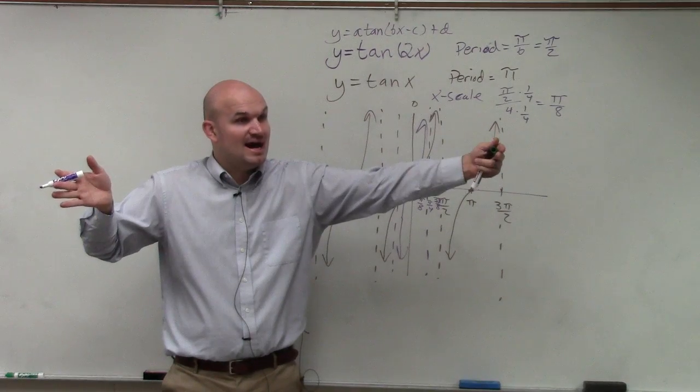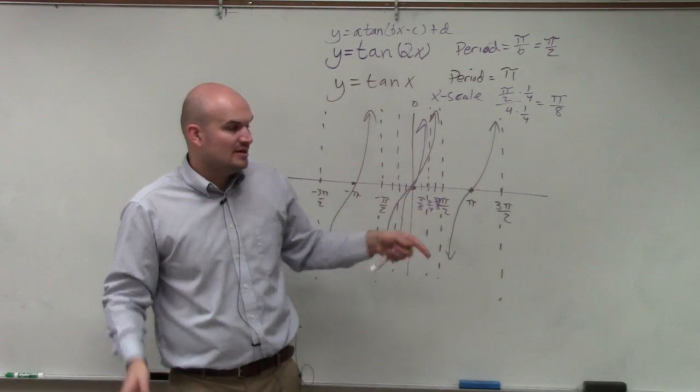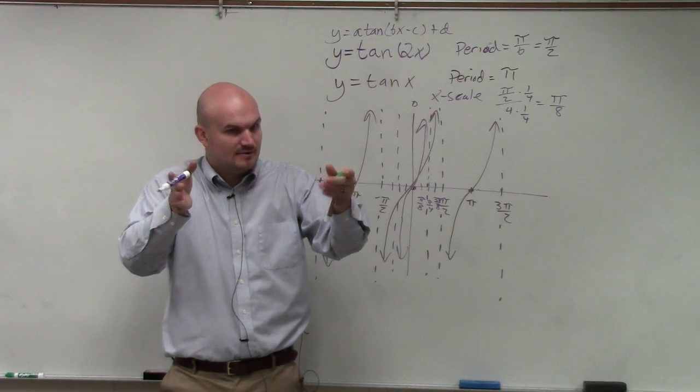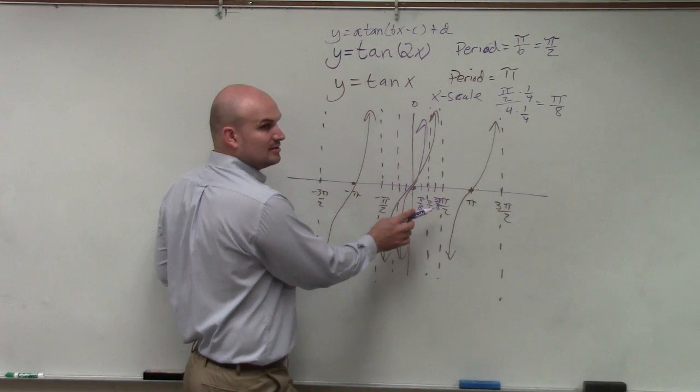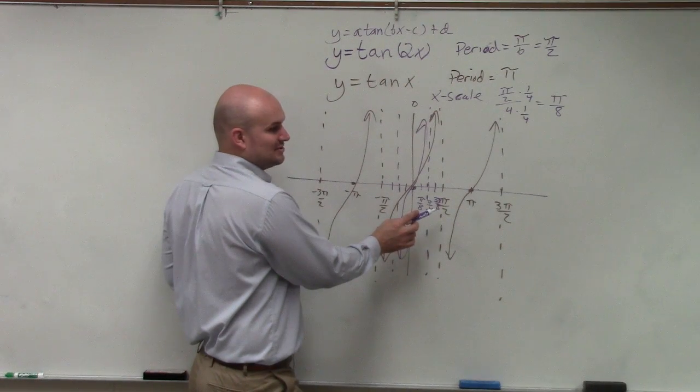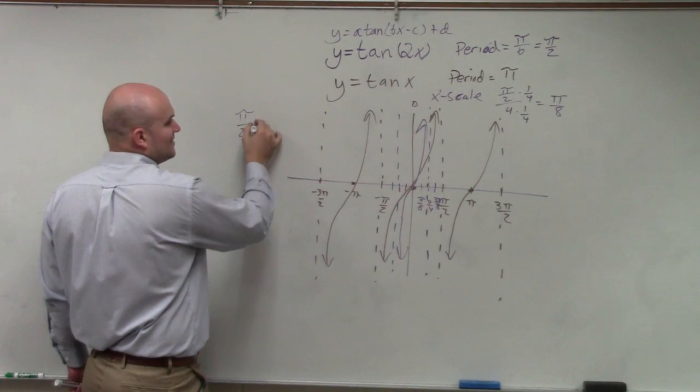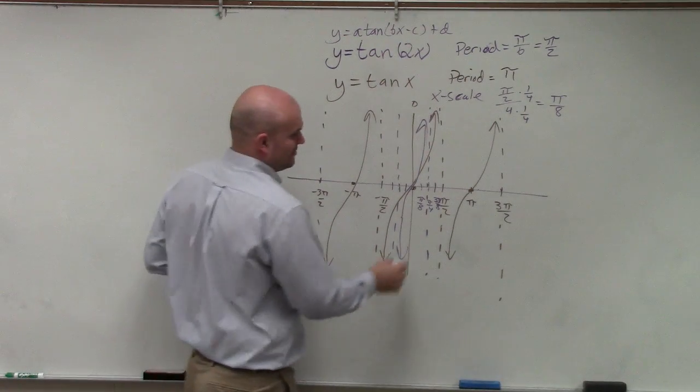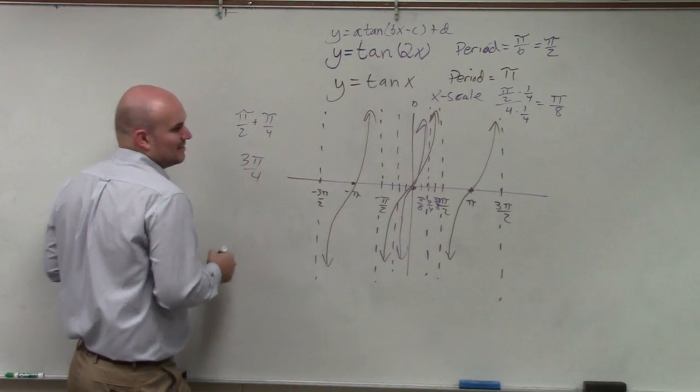Instead of the period being pi, now the period is pi halves. I didn't shift it anywhere, so the intercept is still the same. It's just now the period got shrunk smaller. Does everybody see that? Then to find the next one, all I need to do is add pi halves plus 2 pi over 4.